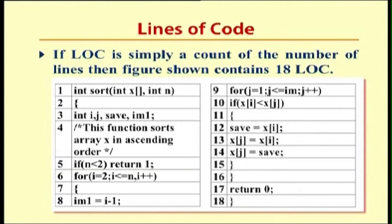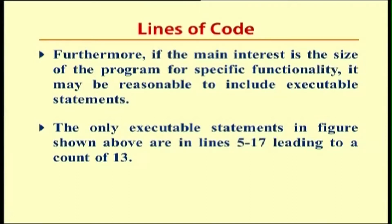Here is an example for estimating lines of code. If LOC is simply a count of number of lines, the example figure contains 18 lines of code for a program that sorts an array in ascending order. If we take 10 dollars to execute every line of code, this program costs 180 dollars. However, if the main interest is the size for specific functionality, it may be reasonable to include only executable statements.